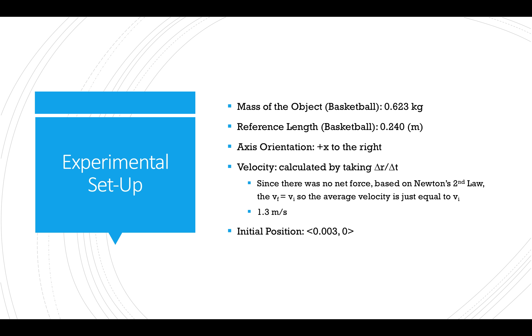The average velocity was calculated by taking the change in position over the change in time. The position update equation requires the average velocity but since there was no net force acting on the object the final velocity was equal to the initial velocity and so the average velocity was just VI. This value is found to be 1.3 meters per second. The initial position was found by using the position information from the data analysis conducted in the tracker application.